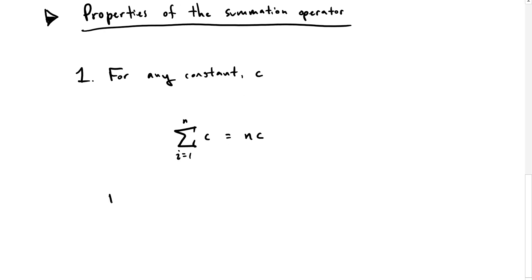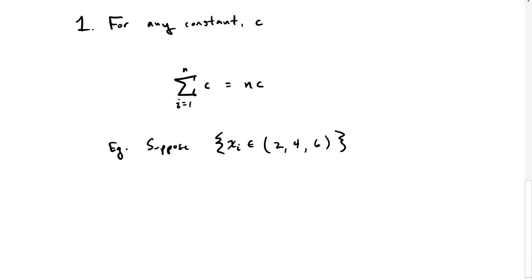For an example, suppose that xi contains the numbers 2, 4, and 6. In this case, for example, if c is equal to 2 and n is 3, we have three numbers.